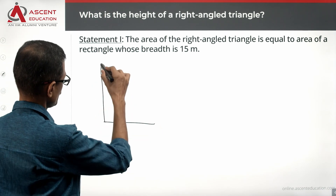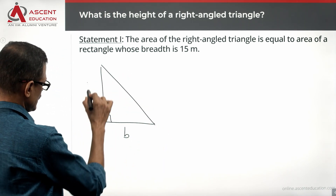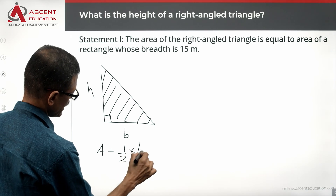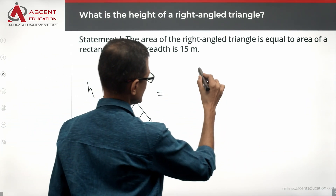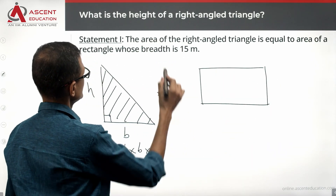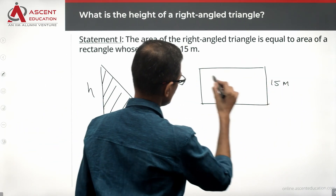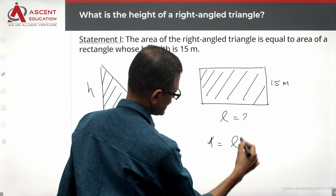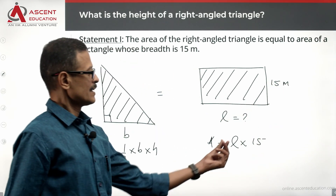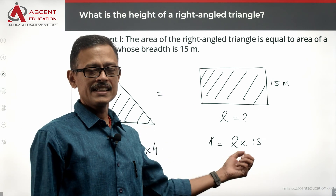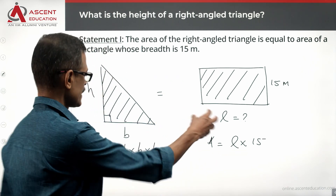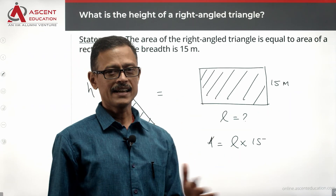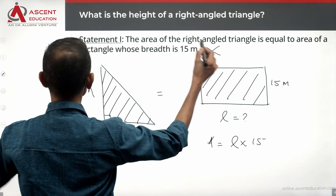The area of a right triangle is equal to half times base times height. The area of the rectangle equals length times breadth, where breadth equals 15. If the length L is 10, the area is 150; if L is 20, the area is 300. Substituting different values of L gives different values for the height. We do not know the length of the rectangle to equate the areas, so Statement 1 is not sufficient.